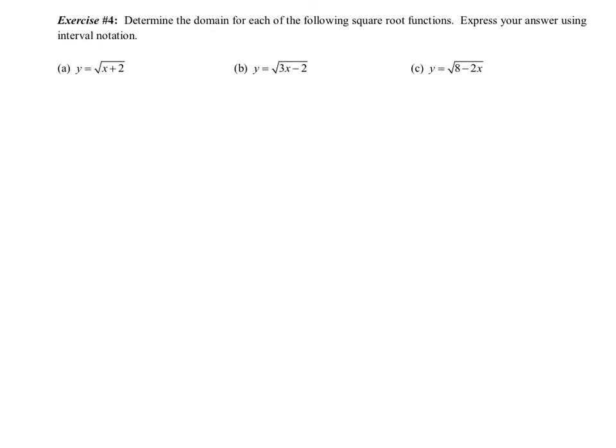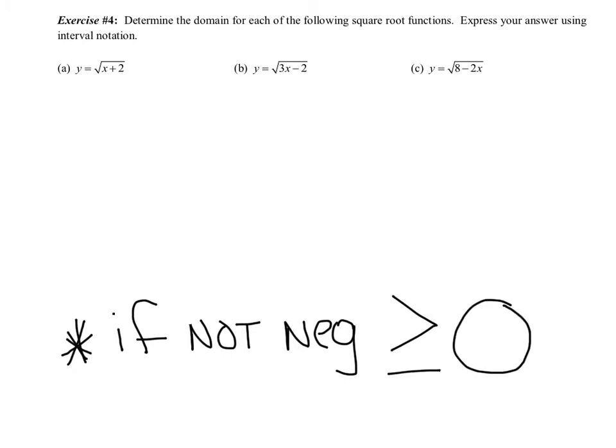Exercise 4: Determine the domain for each of the following square root functions. Express your answer using interval notation. Now, we do need to slow down here. We just said we can't have a negative number. So, I want you to think about this. And let's start this in our notebook. If you're not negative, that means you are greater than or equal to 0. Now, remember, you are allowed to equal 0. If you equal 0, you're not negative. So, if you are not negative, you are greater than or equal to 0. So, basically, what we're saying is anybody under the radical has to be greater than or equal to 0.